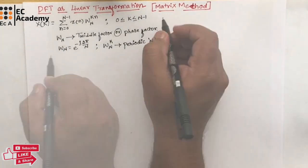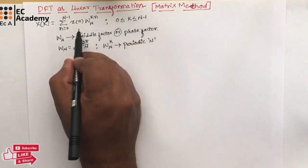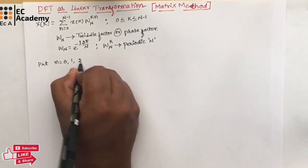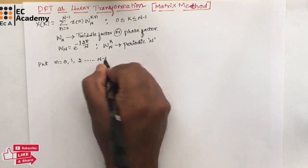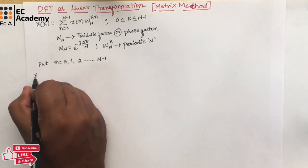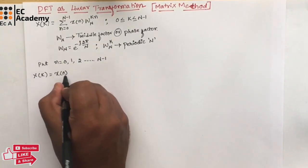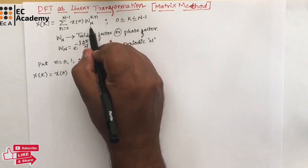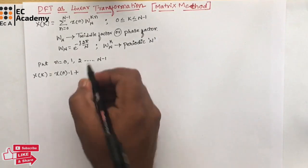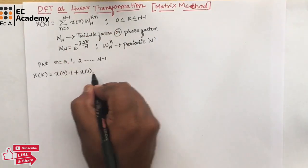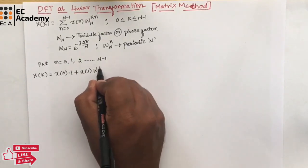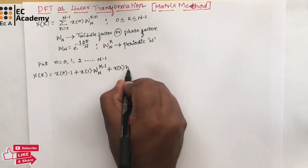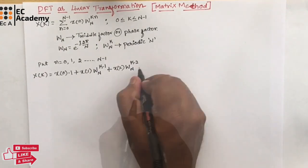Now, in this equation, let us put the value of n ranging from 0 to N-1. If we put n = 0, 1, 2, and so on up to N-1, we will get: X(k) = x(0)·1 + x(1)·W_N^(k·1) + x(2)·W_N^(k·2) + and so on.